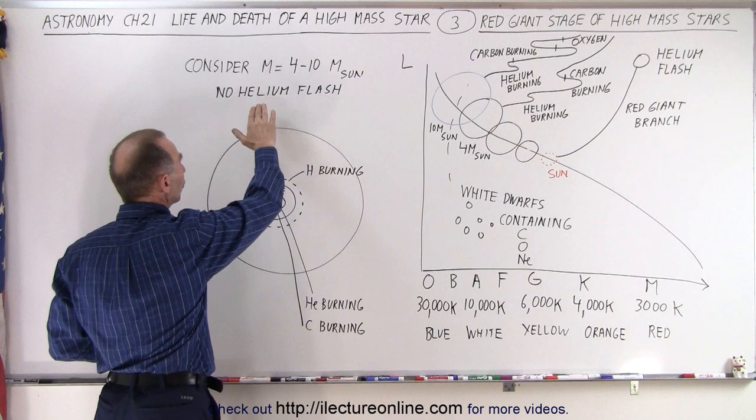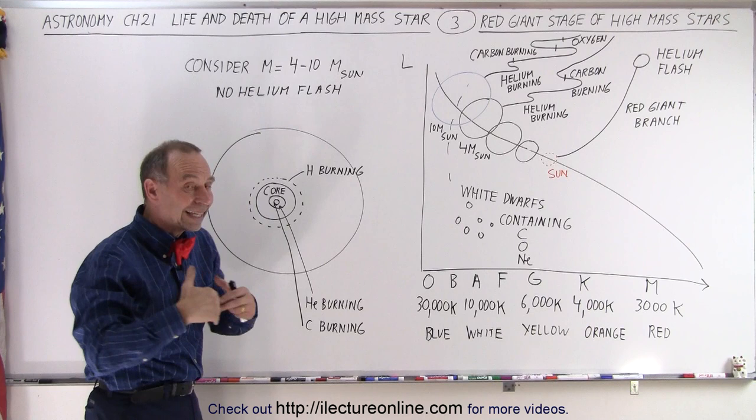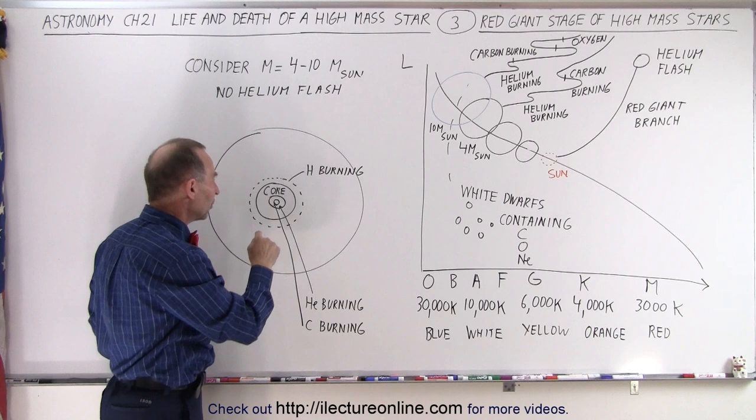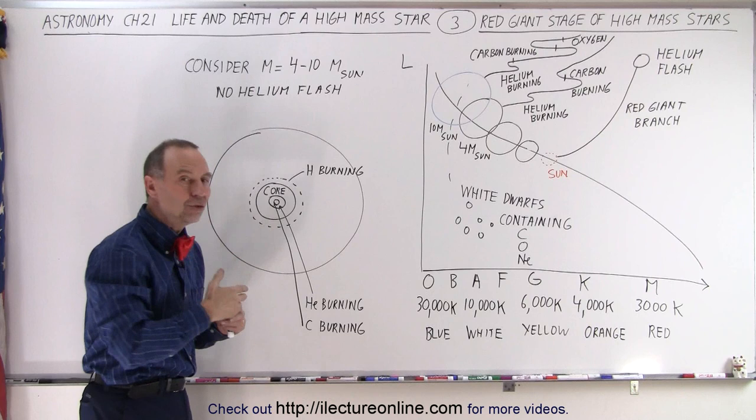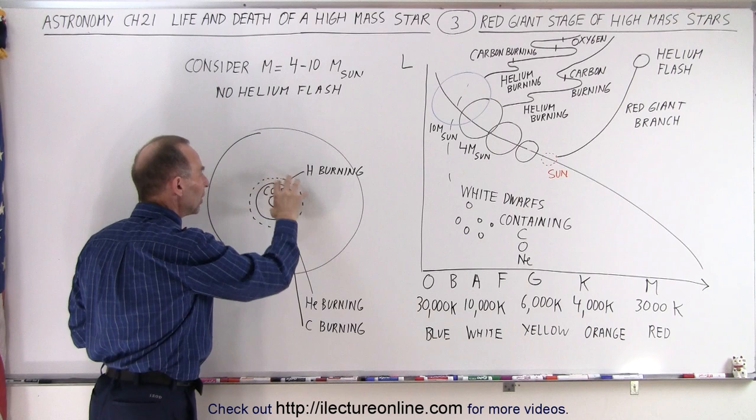But for larger stars, from 4 to 10 times the mass of the sun, notice they go through a different kind of process. When they get very close to finishing burning all their hydrogen into helium in the core, they start burning helium into carbon, and at the very center, potentially already carbon into oxygen.